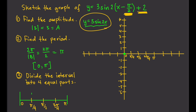Let's sketch y equals 3 sine 2x. We start at zero. Pi over 4 corresponds to the highest point, which is 3. Then we return to zero, and the third key point corresponds to the lowest point on the graph. We connect those points to complete one period of y equals 3 sine 2x.